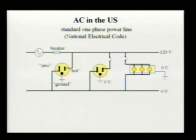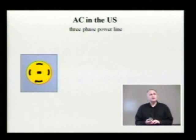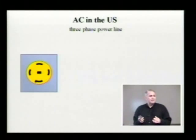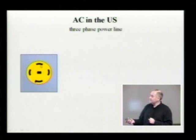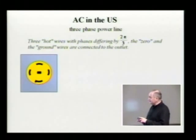In the United States, the voltage in sockets oscillates at a frequency of 60 hertz. When there is a need for more power — because these sockets are not capable of running a lot of power, such as machinery in a factory — you can consider using a three-phase power line. This is a socket for a three-phase power line and it has a ground contact, a zero contact, and three hot wires.